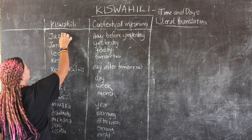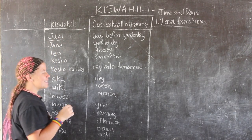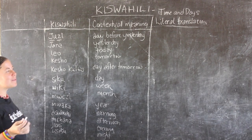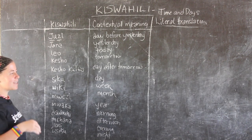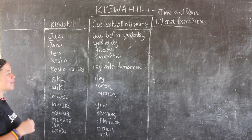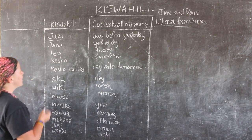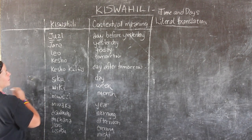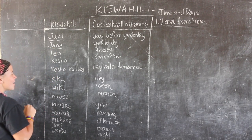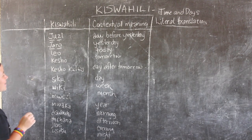The first one is 'juzi.' It literally means the day before yesterday, but sometimes people use it just to talk about some days that have passed — so it might not actually be the day before yesterday, but something that happened before yesterday at some point in time. Jana means yesterday.